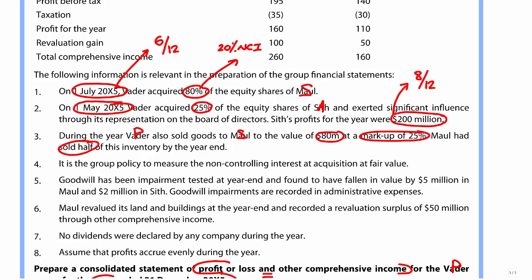It's the group policy to measure the non-controlling interest at fair value, which is important if there is any impairment in the subsidiary because we need to put that in S's column so the non-controlling interest get their share. Goodwill has been impairment tested and found to have fallen by $5 million in MALL and $2 million in SIF. The impairments go into admin expenses for the sub, and for the associate we put it in the share of profit of associate line item.